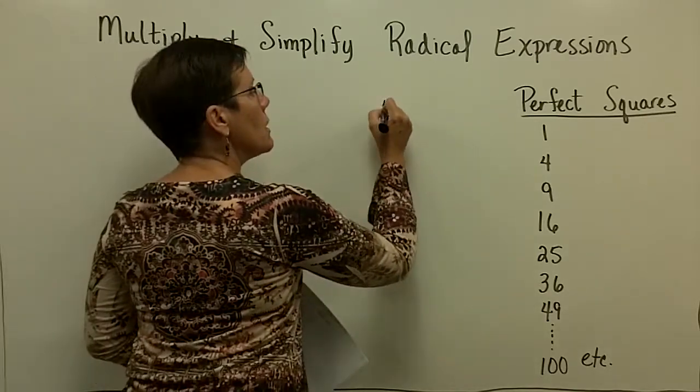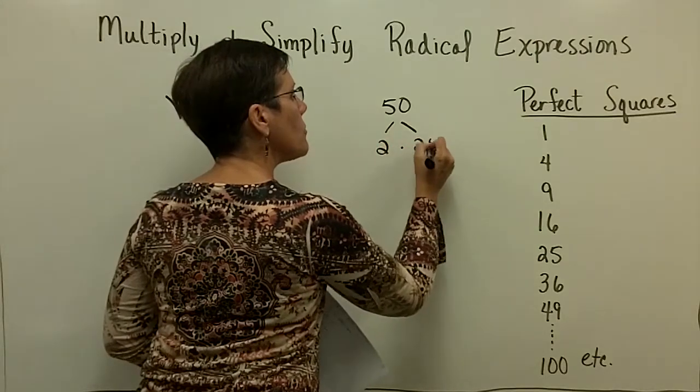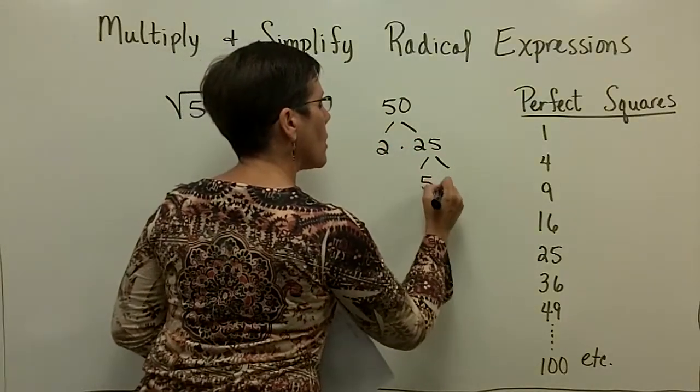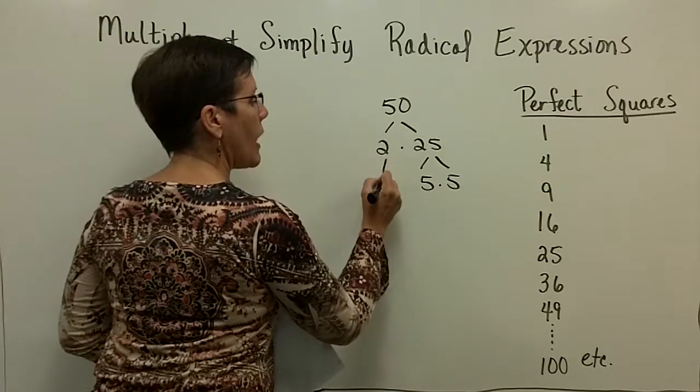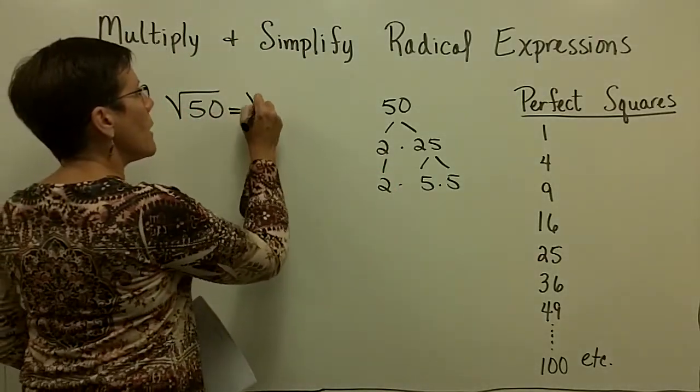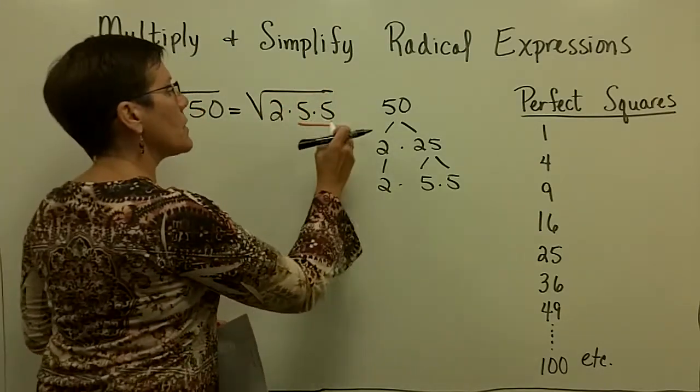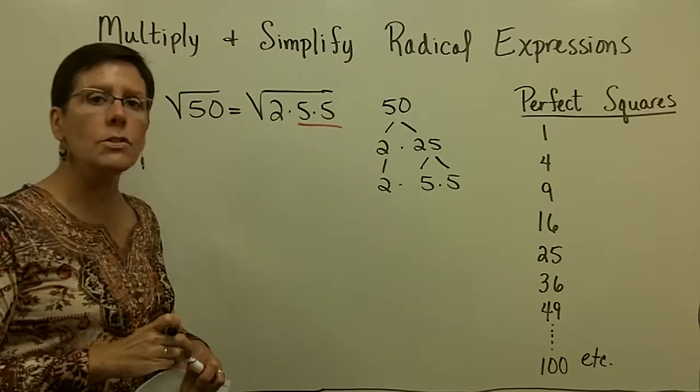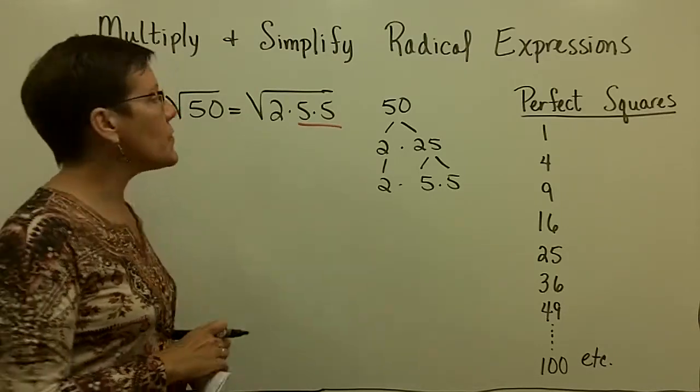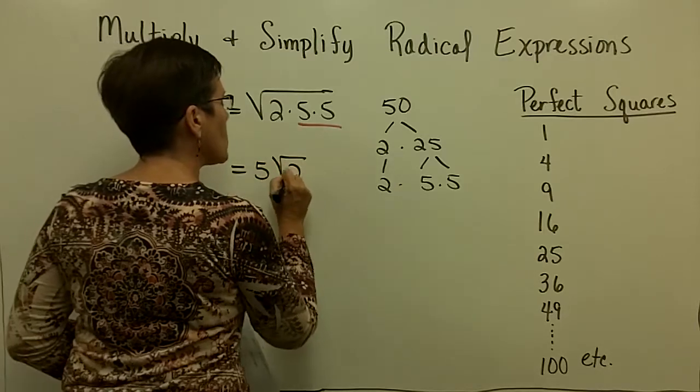And if you need to, you could come over here and say, okay, prime factors 2 times 25, and oh yeah, there we go, 25 is 5 times 5. So there's my prime factors of 50, so I might write that as 2 times 5 times 5, and I would say, oh, look, there's a pair of common factors. The square root of that is 5. I would bring that out from underneath the radical, and I'd have 5 times the square root of 2.